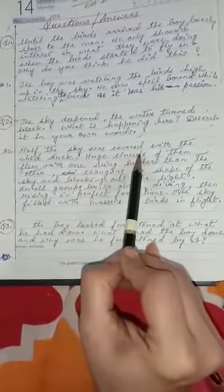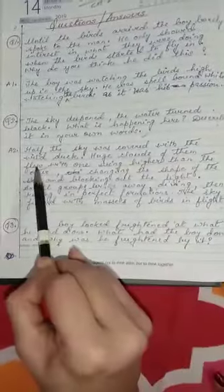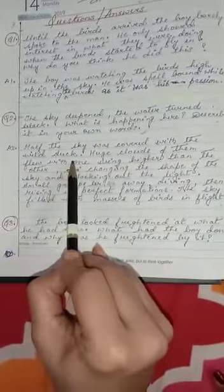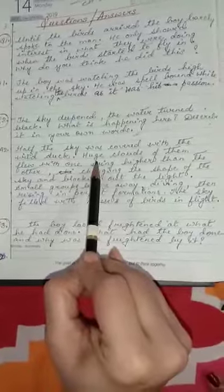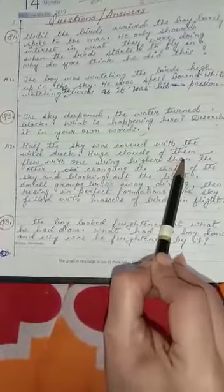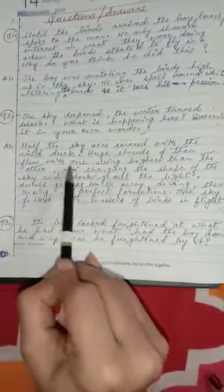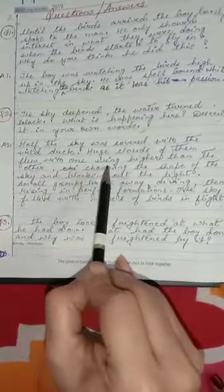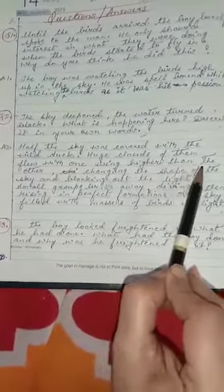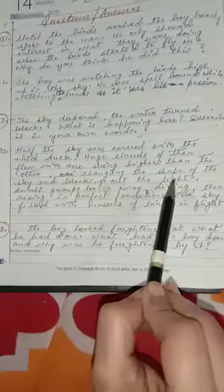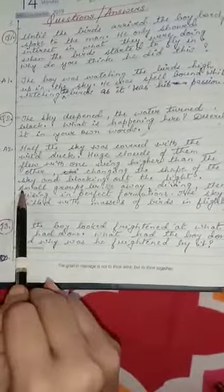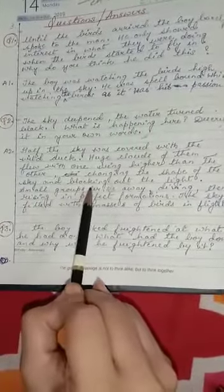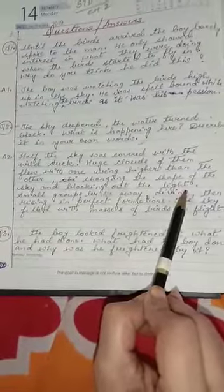Answer two. Half the sky was covered with the wild duck. Huge clouds of them flew with one wing higher than the other, changing the shape of the sky and blocking out the light.